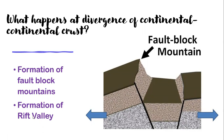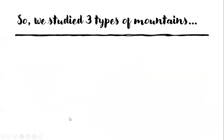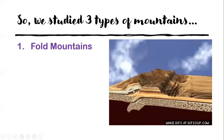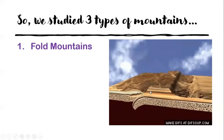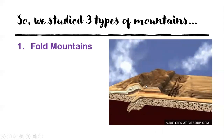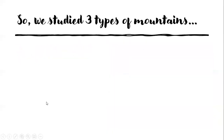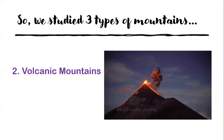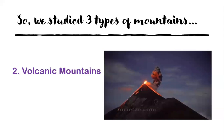We also have the formation of a rift valley. So by now we have studied three types of mountains: number one, fold mountains — formed when two continental crusts collide and converge, the earth's crust folds up. Then volcanic mountains, formed because of subduction — when an oceanic plate subducts under a continental plate, or an oceanic plate under another oceanic plate, magma chambers form and we have volcanic mountains.